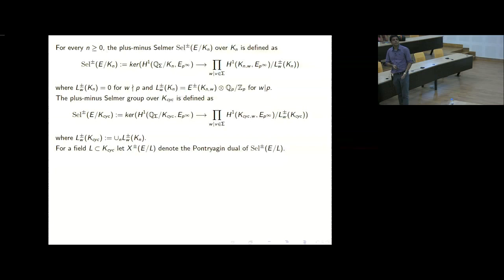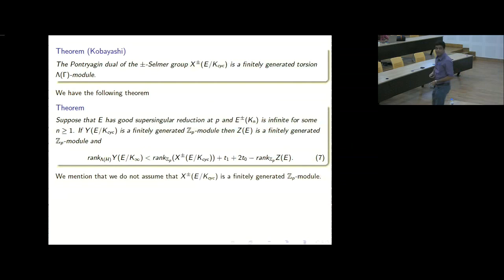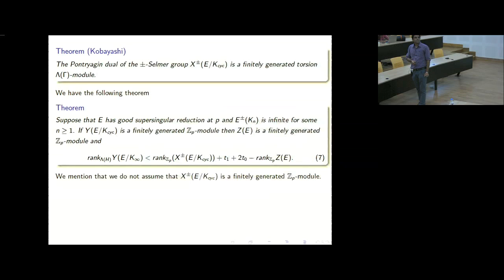We can now try to generalize the theorem from the ordinary case to the supersingular case. We need a result of Kobayashi, which says that the plus-minus Selmer group is a finitely generated torsion Λ-module once we take the extension Q(μ_P). Once we have torsion, we can talk about lambda and mu invariants. Then we have a theorem — a direct generalization of the ordinary case theorem — which says that the corank of the fine Selmer is strictly less than the plus-minus corank.